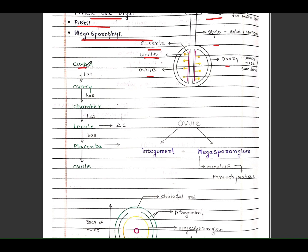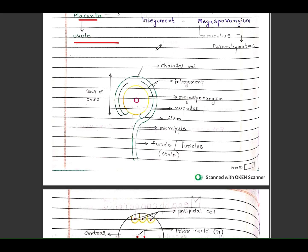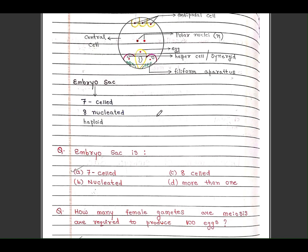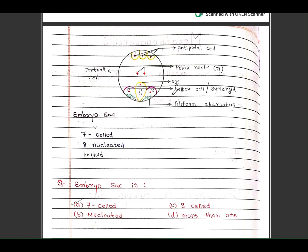Carpel has ovary, ovary has chamber, chamber has locule, more than or equal to one. Locule has placenta, placenta has ovule. Diagrams you can study deeply by yourself.